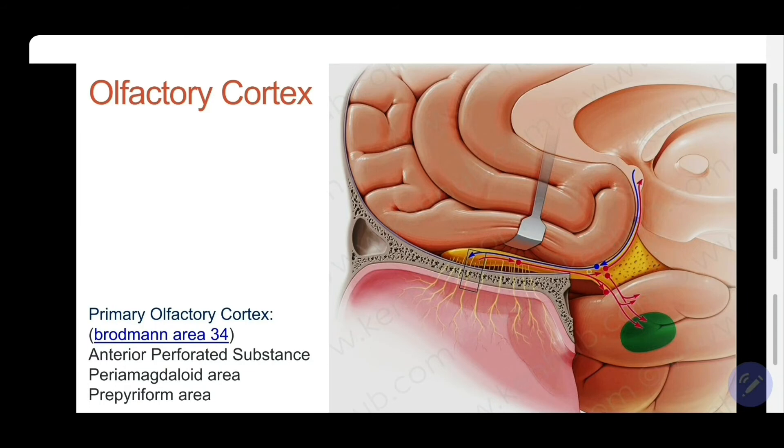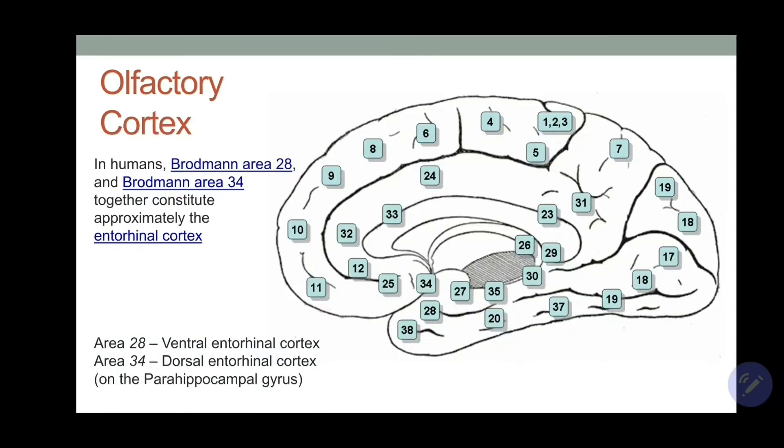From here you can see these are the association fibers. You can see the tertiary neurons from primary to the secondary, that is uncus. So now about the Brodmann's area.